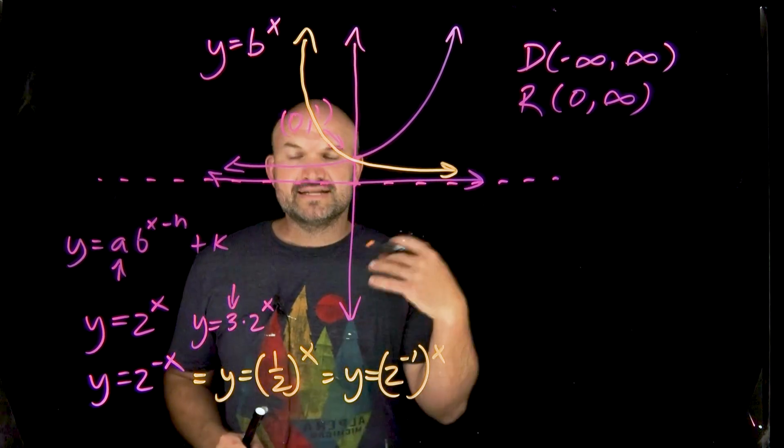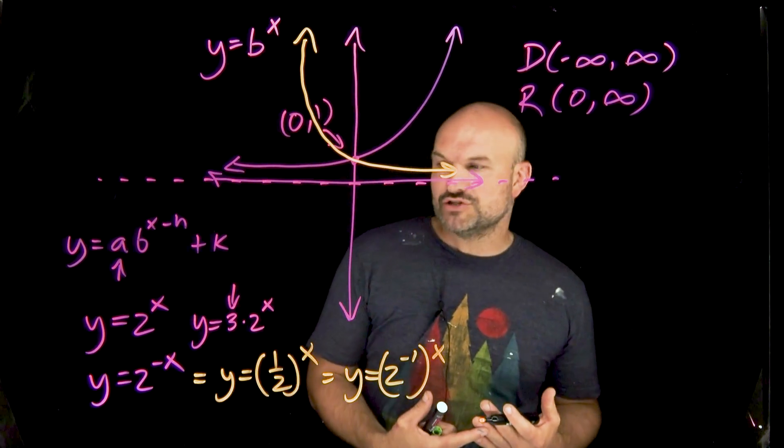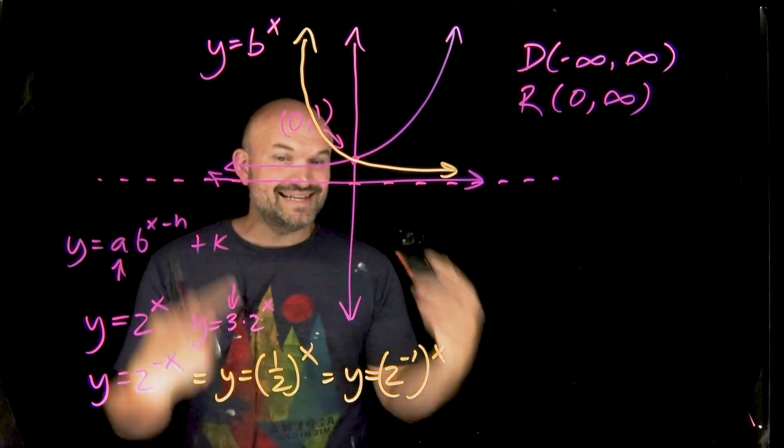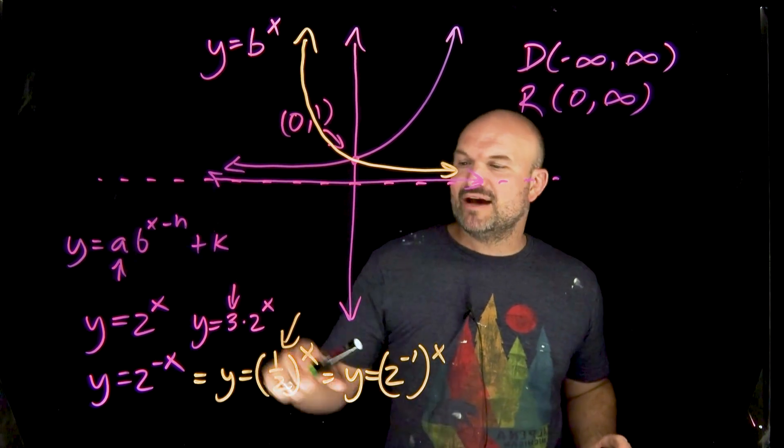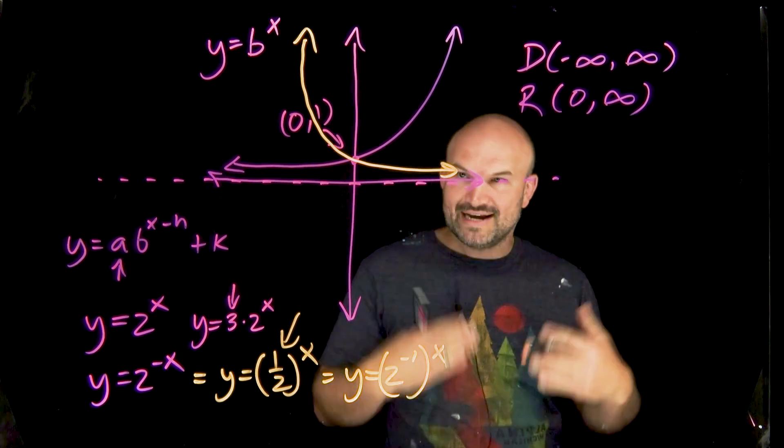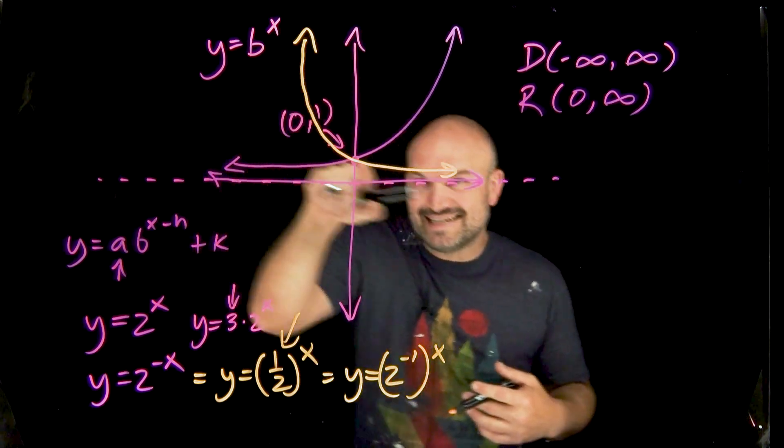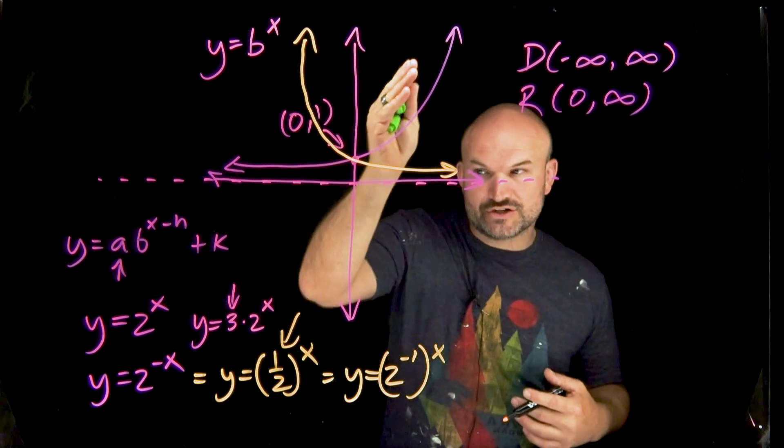And that's what's really important because sometimes you'll see exponential functions given with a negative power. And then sometimes you'll see them as a base, as a fractional base. So anytime you have your base that is between zero and one as a fraction, it's going to be a decay function, not going to be a growth function. So those are some very, very important characteristics.